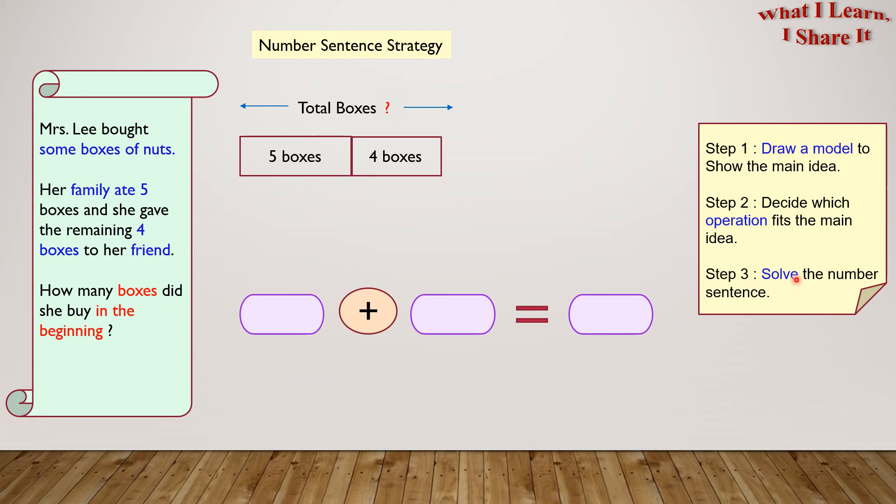Step three, solve the number sentence. So five, which comes from here, plus four, which comes from here, equals nine. So the total boxes equals nine. Mrs. Lee bought nine boxes of nuts in the beginning. Yay! We solved the problem!